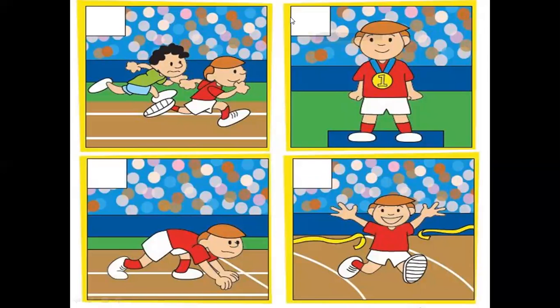Move on to next. Now you say, children — which activity will come first? Yes, the boy is ready to run — so this one is first. Then, the boy is running — that is second. Then, the boy is winning the game. After that, he got the medal — that is number four. So, this is called sequencing the order.